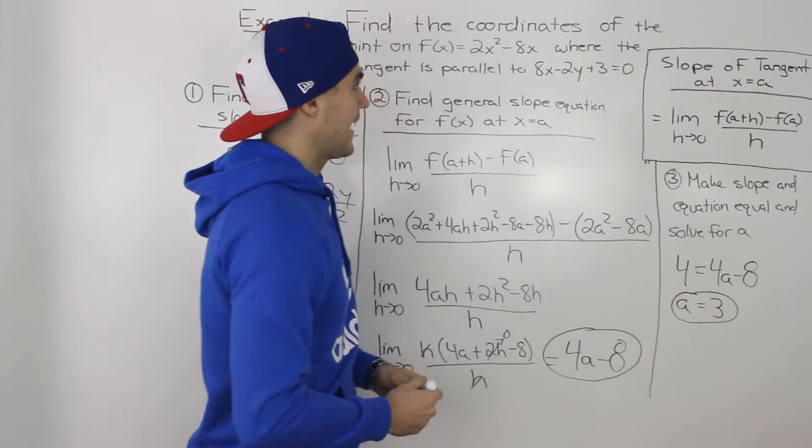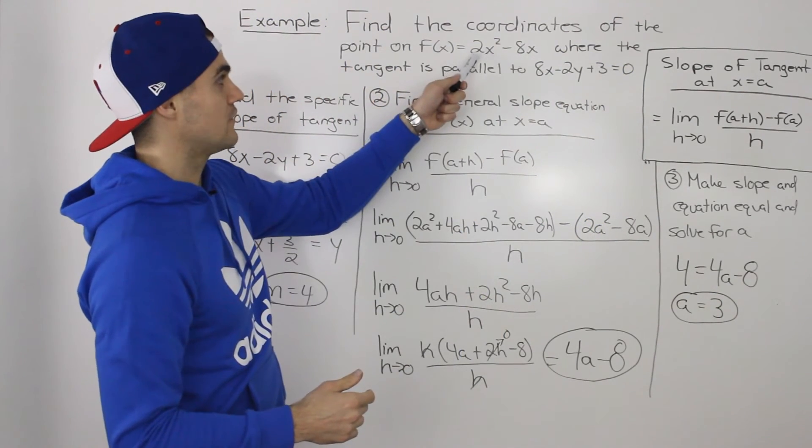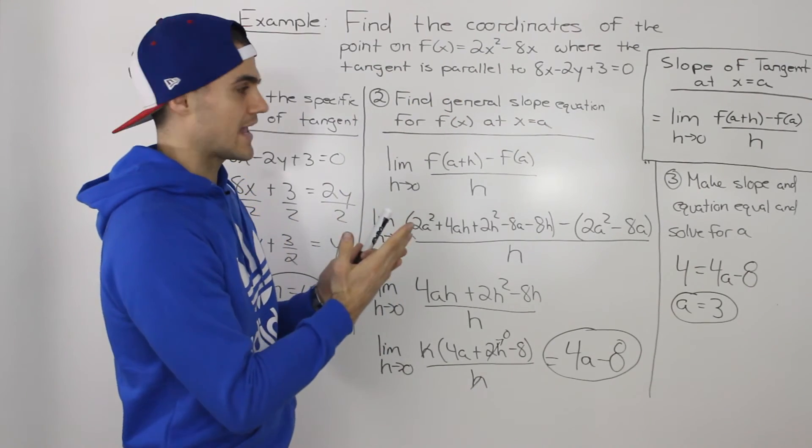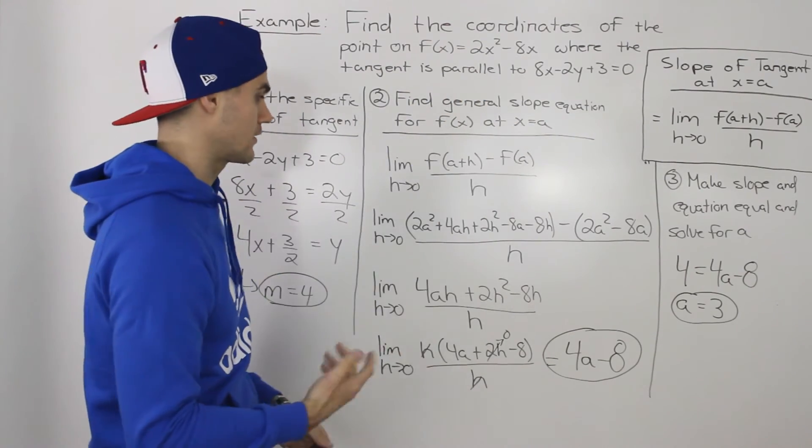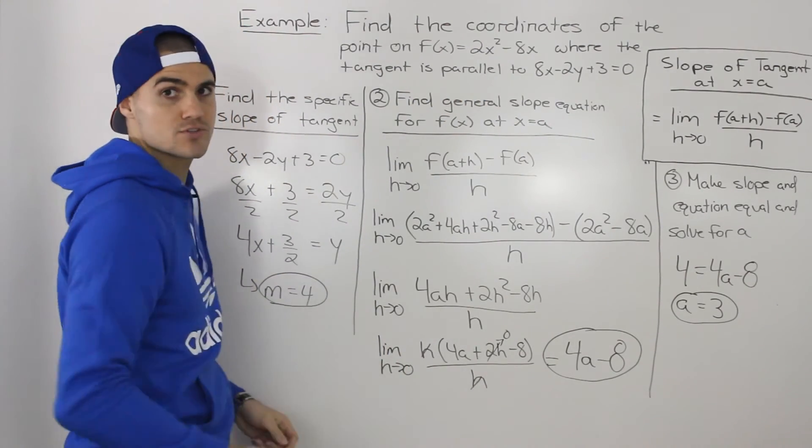So at an x value of 3 on this function, the slope of the tangent is parallel to this line, or the slope of the tangent is equal to 4.